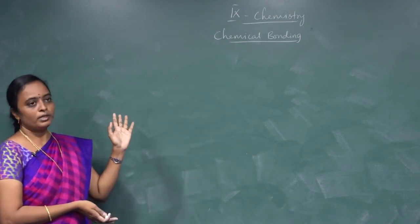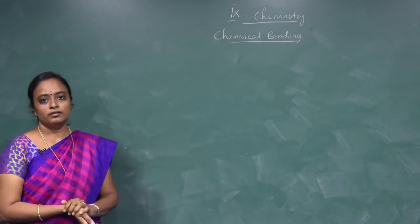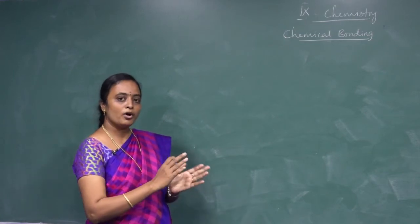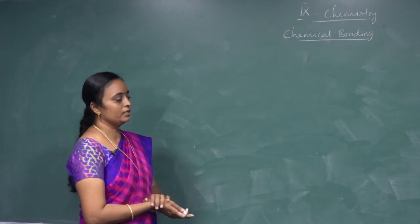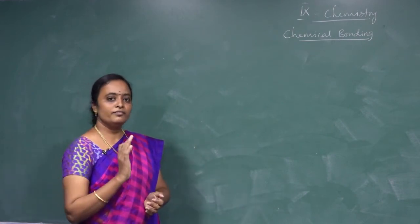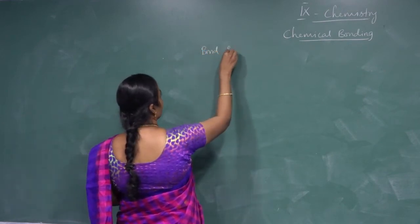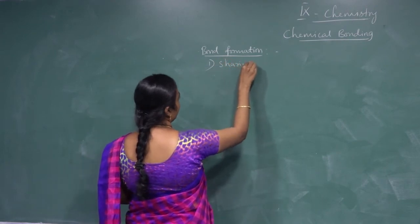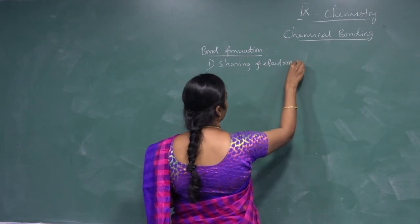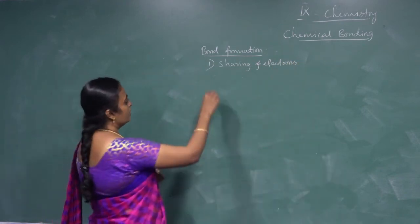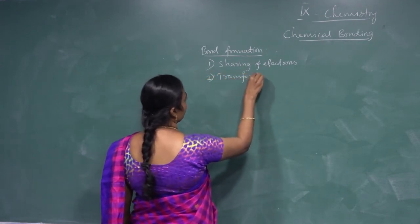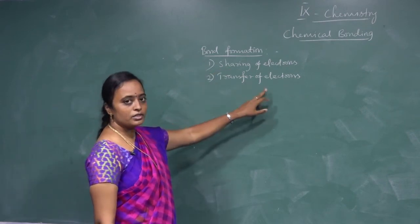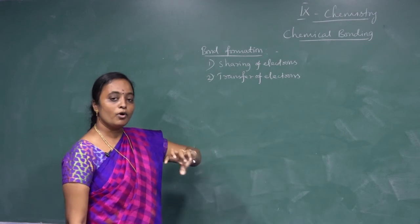If we take atoms of other elements, how is the bond formed? Bond formation occurs due to two mechanisms: first, by sharing of electrons between the two atoms; second, by transfer of electrons from one atom to another. The bond formation will occur in these two ways.